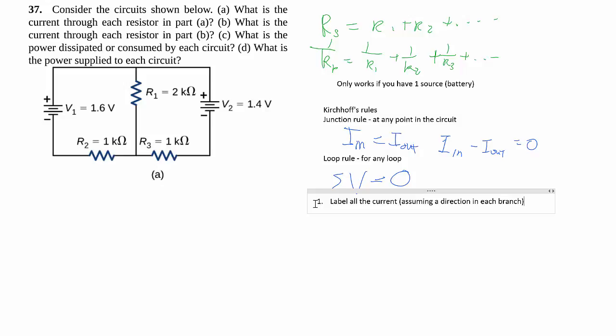So that's why it's important to define and choose a direction. You could be wrong, you end up with a negative number, then you know that you flipped it around. But you have to pick one already.